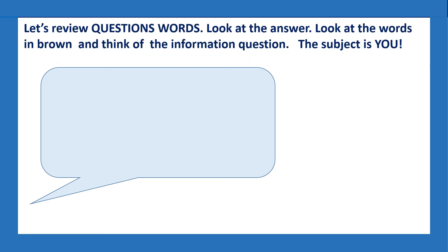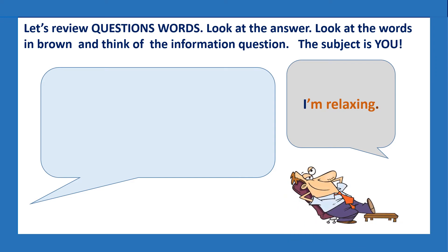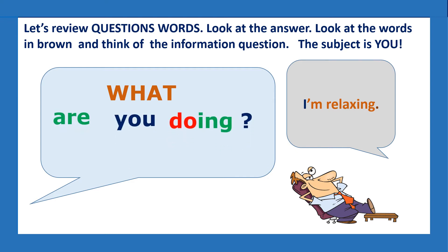Now let's review question words. Look at the answer and think of the information question. The subject is 'you.' I'm relaxing. What's the question? What are you doing? I'm relaxing. The word in brown is a verb. So when the answer is a verb, the question word is 'what,' and you need the verb 'do' in the question. What are you doing now? I am relaxing. What do you do after school? I relax.